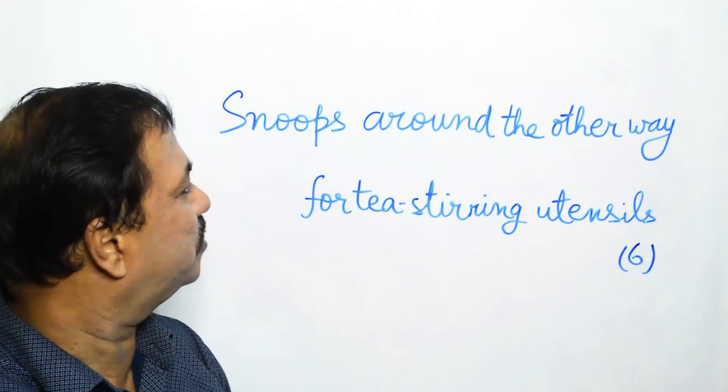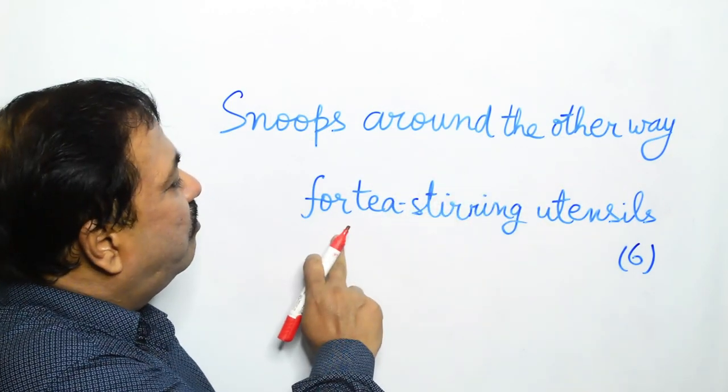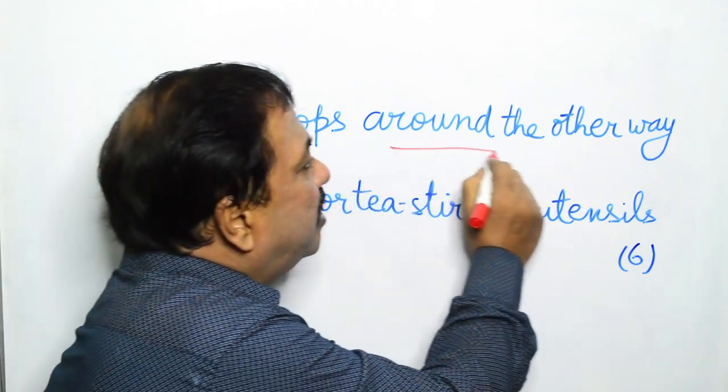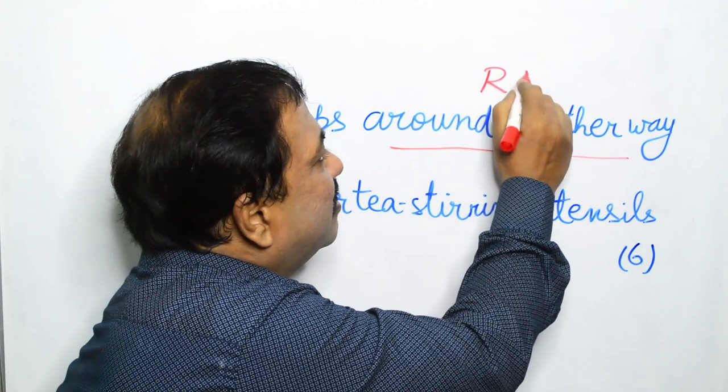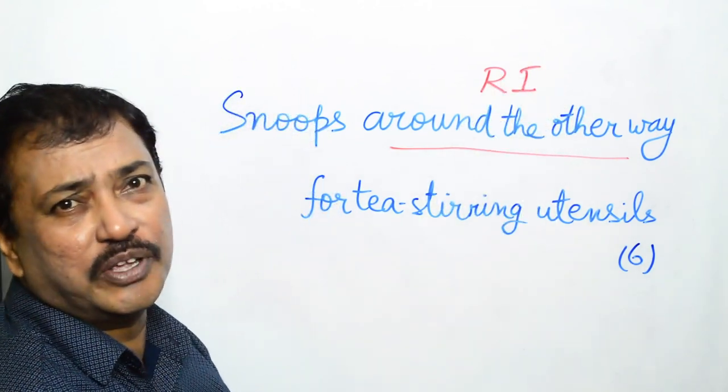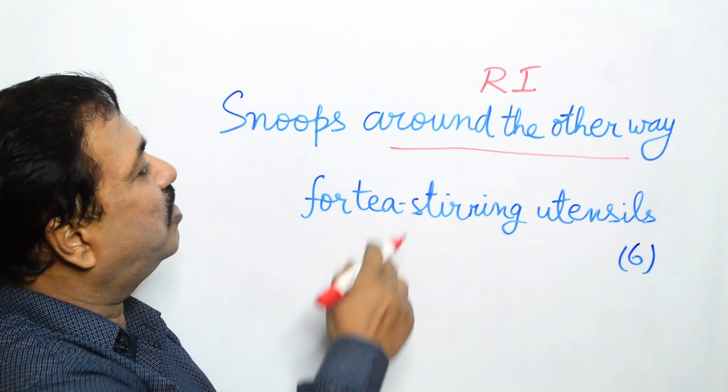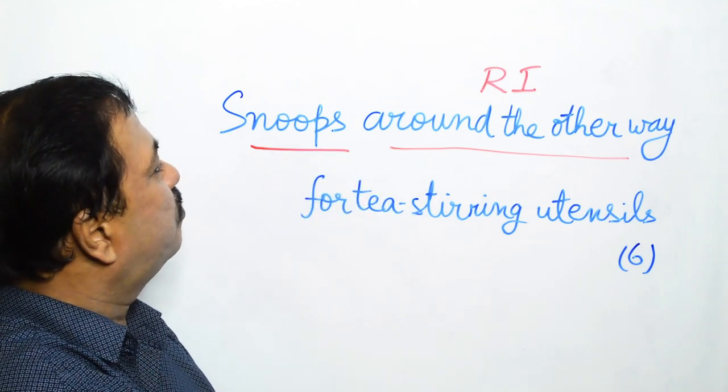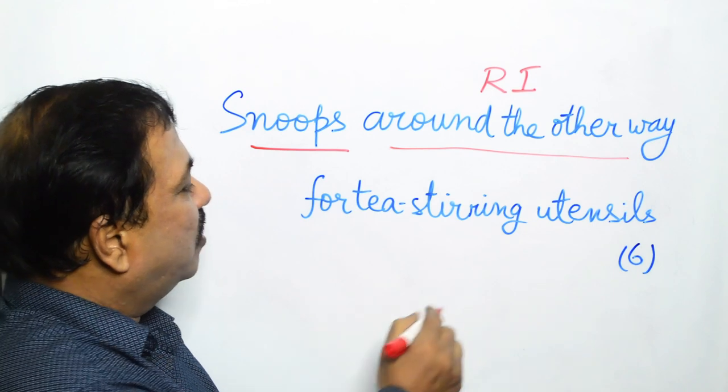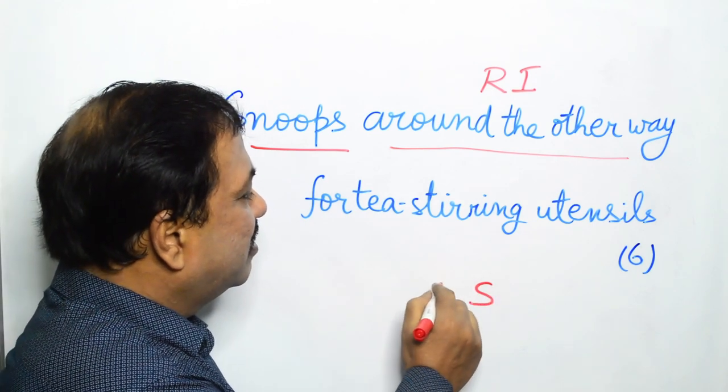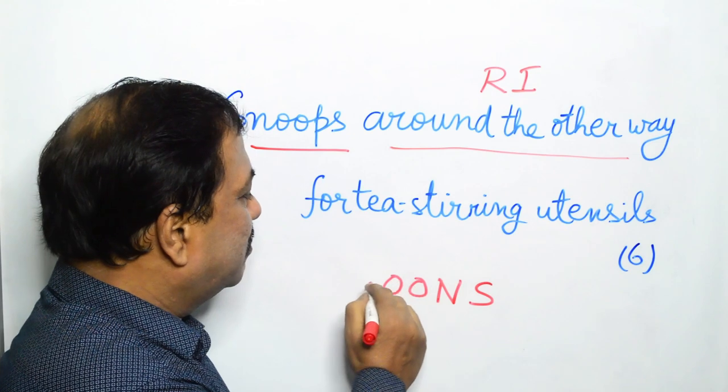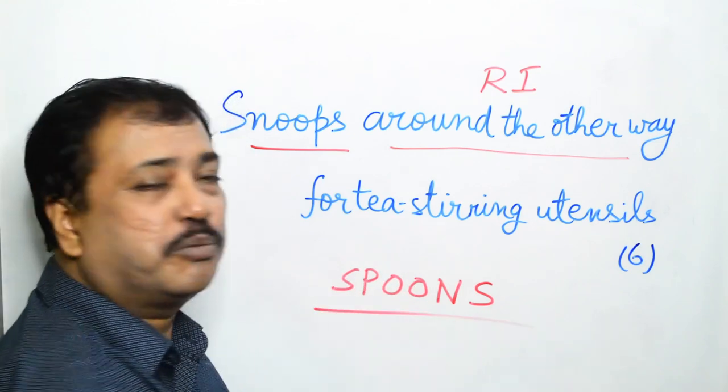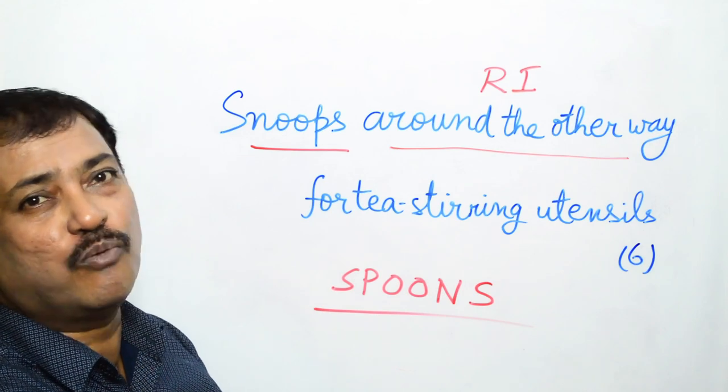Our next clue: Snoops around the other way for tea stirring utensils. Around the other way is a very good piece of reversal indicator. Now we do the reversal of snoops, and in the process we get spoons. And what are spoons? Spoons are tea stirring utensils.